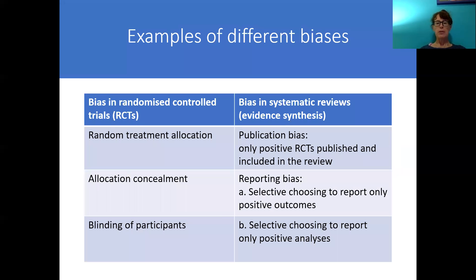Here are examples of different biases with two different study designs. Bias in randomized controlled trials could include random treatment allocation, allocation concealment, or blinding of participants. However, bias in systematic reviews or evidence syntheses can include publication bias — where only positive randomized controlled trials are published and included in a review — reporting bias, such as selectively choosing to report only positive outcomes and not negative ones, or selectively reporting only positive analyses.